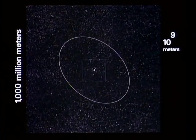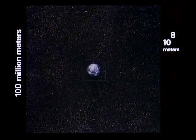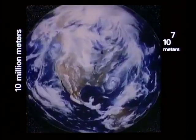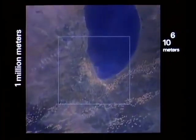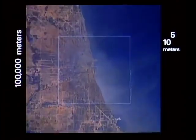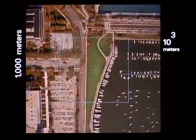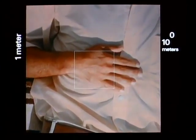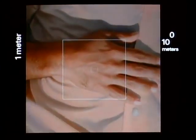10 to the ninth meters, 10 to the eighth, seven, six, five, four, three, two, one. We are back at our starting point. We slow up at one meter, 10 to the zero power. Now we reduce the distance to our final destination by 90% every 10 seconds, each step much smaller than the one before.